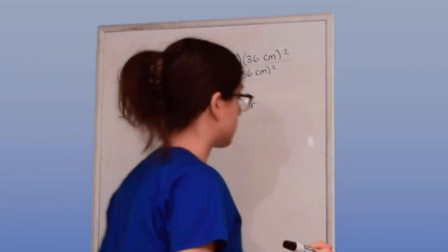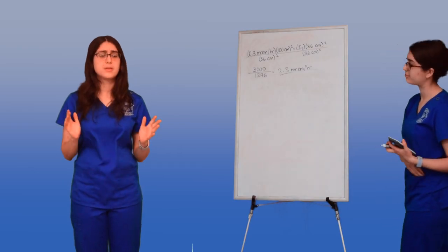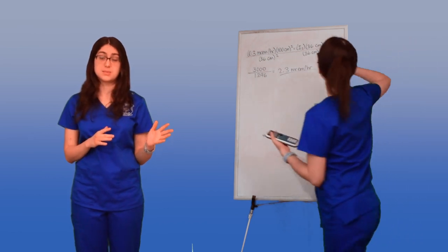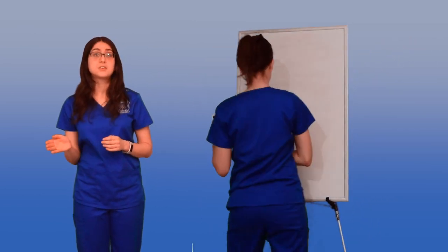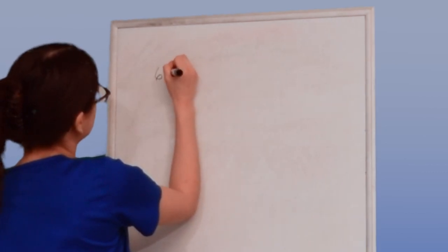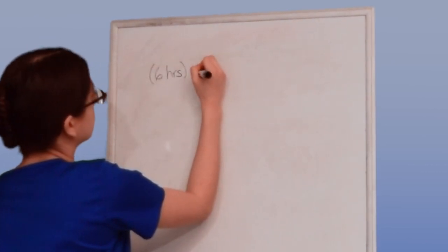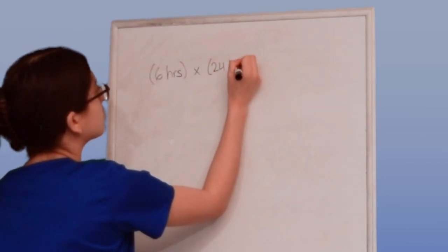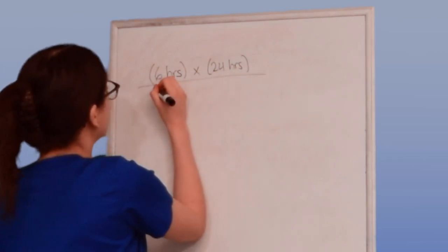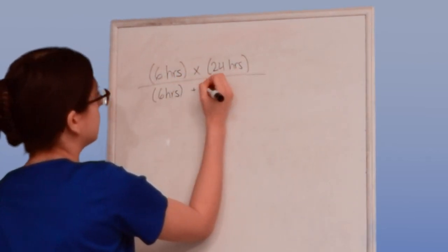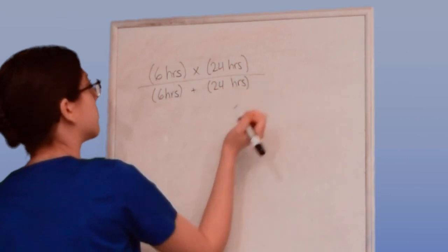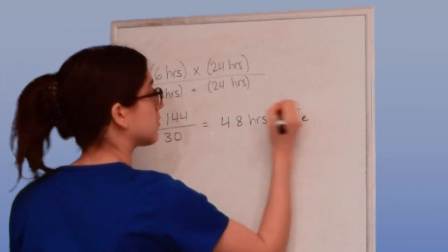Now, let's think about that radioisotope's effective half-life. We know that the physical half-life of technetium is 6 hours, and the biological half-life of technetium is 24 hours, so what's the effective half-life? Well, I can take that physical half-life multiplied by biological half-life, divided by physical half-life plus biological half-life, and we get 4.8 hours.